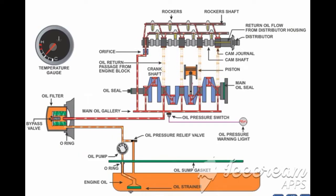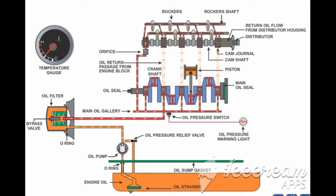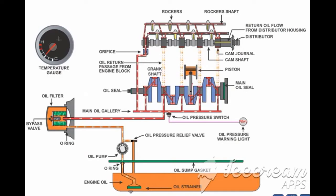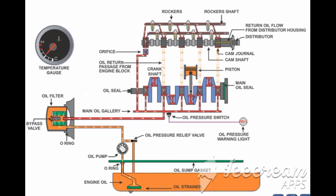Oil flowing towards the cylinder head passes through a small orifice, which increases its speed and reduces the pressure. After this, the oil lubricates the rockers, camshaft journals, and distributor gear if equipped.